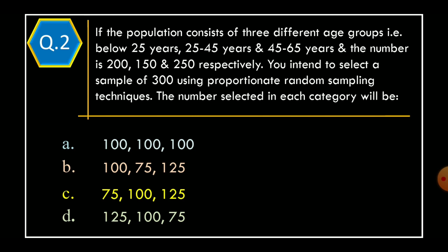Question 2. If the population consists of three different age groups that is below 25 years, 25 to 45 years and 45 to 65 years, and the number is 200, 150 and 250 respectively. You intend to select a sample of 300 using proportionate random sampling techniques. The number selected in each category will be: Option A, 100, 100, 100. Option B, 100, 75, 125. Option C, 75, 100, 125. Option D, 125, 100, 75. And correct option is Option B, 100, 75, 125.